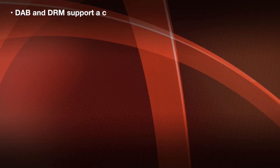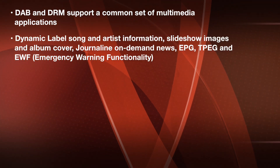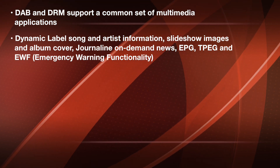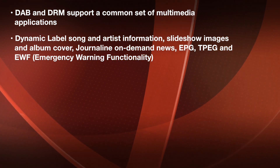The DAB standard supports metadata information to implement service following in case the same program is simulcast on FM and multiple DAB or DRM services. It supports single frequency network, or SFN, where a network of transmitters on the same frequency can provide coverage to a larger area. DAB and DRM support a common set of multimedia applications including dynamic label, artist information, slideshow image, album cover, journaline on-demand news, EPG, TPEG, and EWF emergency warning functionality.